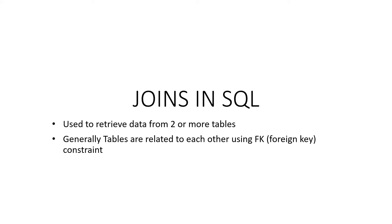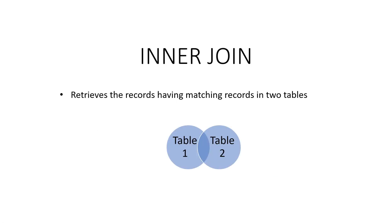Hi everyone, today we will learn about inner joins in SQL. We use inner joins to retrieve data from two or more tables. Generally, the tables are related to each other using the foreign key constraint, so the relationship between the tables is defined while creating the table. The inner join returns only the matching records from both tables.